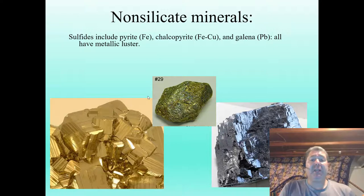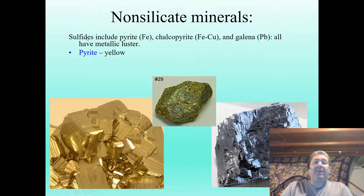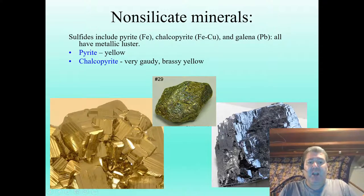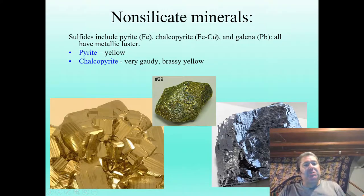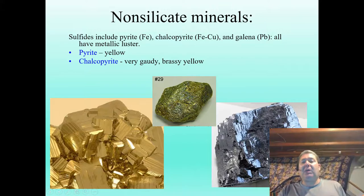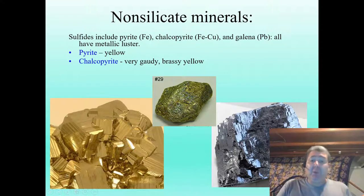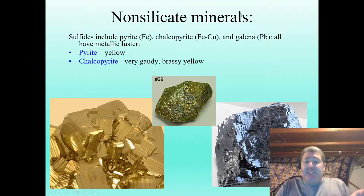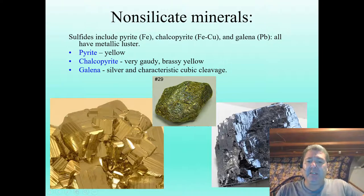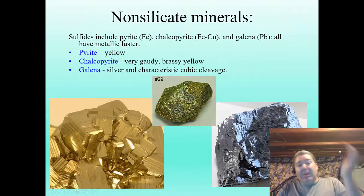The sulfide mineral group is another important ore mineral group. Pyrite is yellow — iron and sulfur together, an iron sulfide. Chalcopyrite is a gaudy, brassy yellow color and has iron and copper in its structure attached to sulfides. Galena has a very cubic cleavage — you can see all sorts of little cubes in its structure, just like salt. It's very dense because it's a lead sulfide, with a very silver characteristic color.